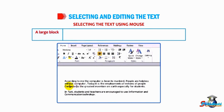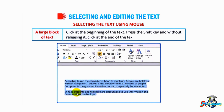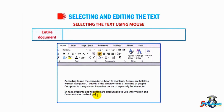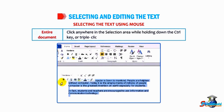To select a large block of text, click at the beginning of the text, press the Shift key, and without releasing it, click at the end of the text. To select the entire document, click anywhere in the selection area while holding down the Control key, or triple click in the selection area.